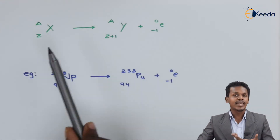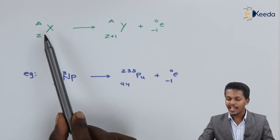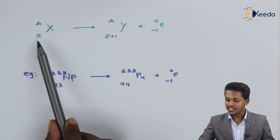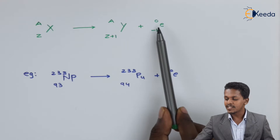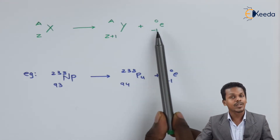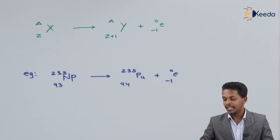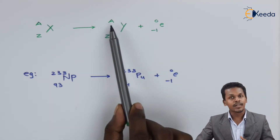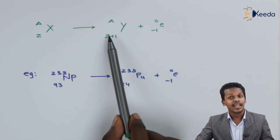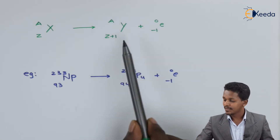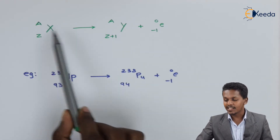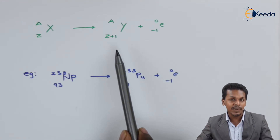This is the general equation: suppose we have an element X having atomic mass A and atomic number Z. After beta decay, the electron is eliminated in the form of charge minus 1. The atomic number of the product formed is increased by 1 unit, while the atomic mass number remains the same. So since the atomic number increases by 1, X and Y are obviously different elements.